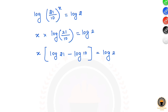Now, log 10 equals 1. And log 21 can be written as log(7×3), so x times (log 7 × 3 minus 1) equals log 2.